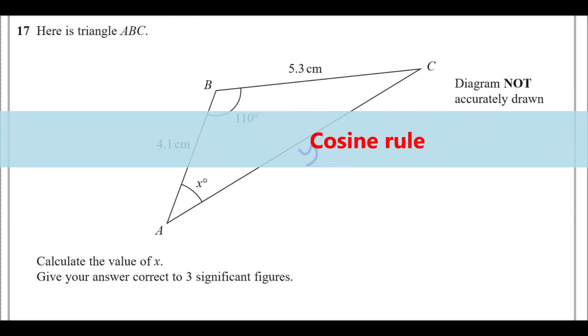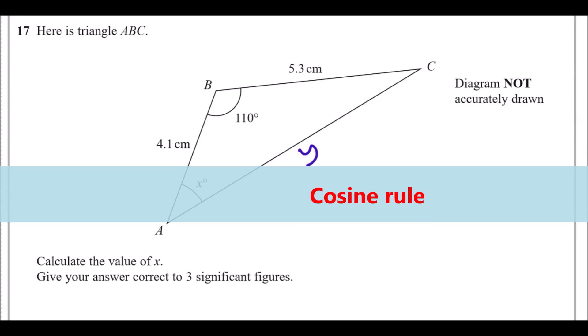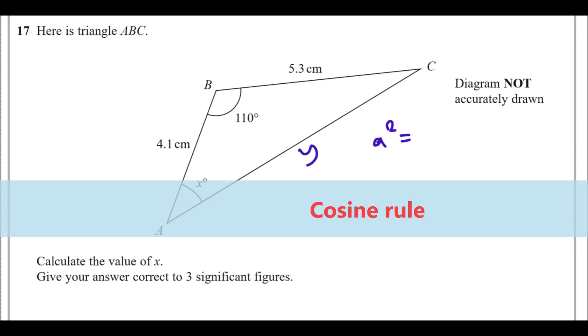To recall, the sine rule looks like this. We have the formula in the back of the book, but it's going to be a squared equals b squared plus c squared minus 2bc cos a.